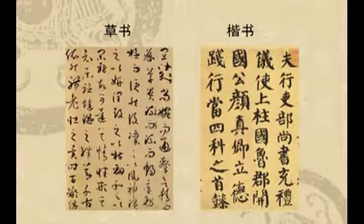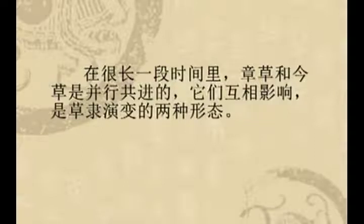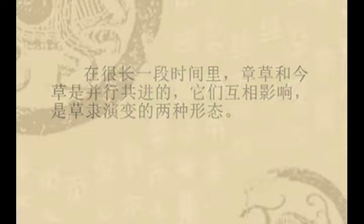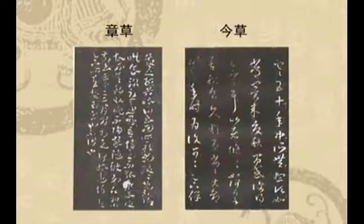草书的形成比楷书早，行书更是晚辈。行书还真是楷书的儿子，但是草书不是它的儿子，它是它的祖宗。我们一般从体态上去看，草书和楷书有相似相类的地方，它们又几乎在相同的时代形成，所以人们将楷书草书视为一种正附体关系。章草和今草是草书演变的两种形态，并行共进，互相影响。古草也是今草的源头。